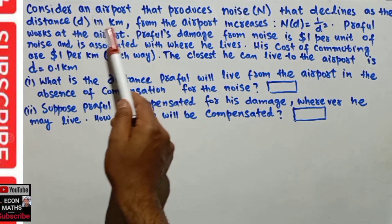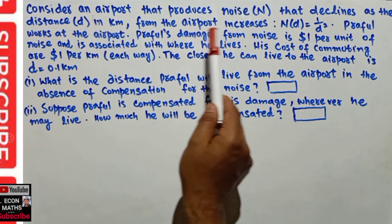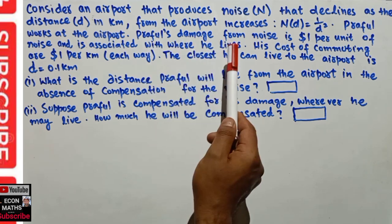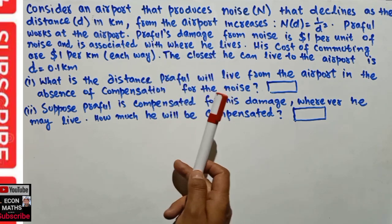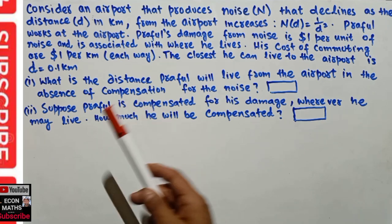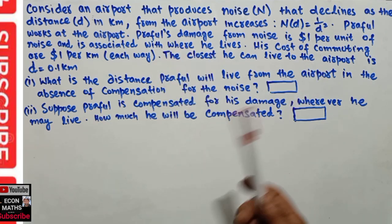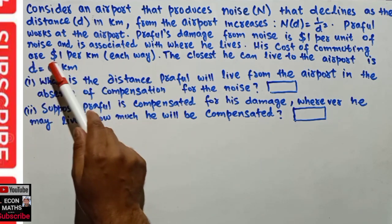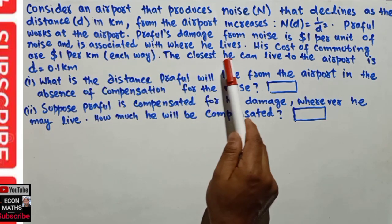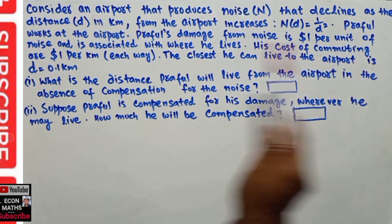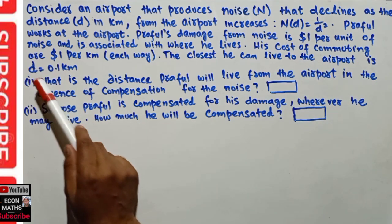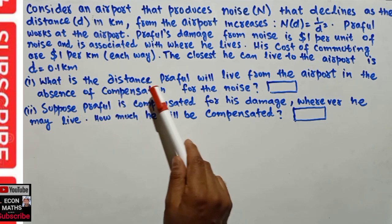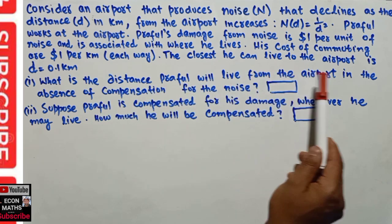Profile is a person who works at the airport. Profile's damage from the noise is one dollar per unit of noise and is associated with where he lives. If he lives closer he will get more damaged; if he lives farther from the airport he will get less damaged. His cost of commuting is one dollar per kilometer each way. The closest he can live to the airport is given as d equals 0.1 kilometer.